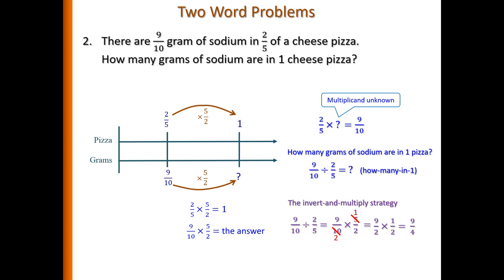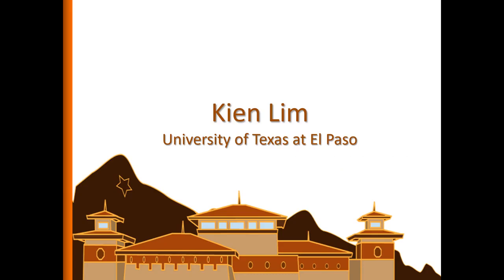So we have seen the two types of word problems involving two different types of division. And we use two different strategies. So the common denominator strategy is good for how many groups type of division. The inverse multiply strategy is good for how many in one group. With that, I hope this helped. Thank you.